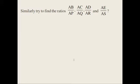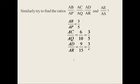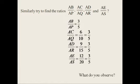Similarly, try to find the ratios AB by AP, which we already found in the table: we get 3 by 5. 6 by 10 is also equal to 3 by 5. AD by AR is equal to 3 by 5. AE by AS is equal to 3 by 5. So what you observe here is that the ratio is always constant. Opposite by hypotenuse is always 4 by 5, and adjacent side by hypotenuse is always 3 by 5 in all cases, even when we increase the length of the hypotenuse and adjacent side.